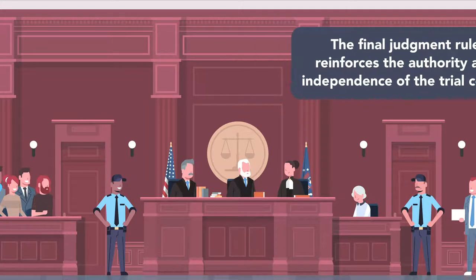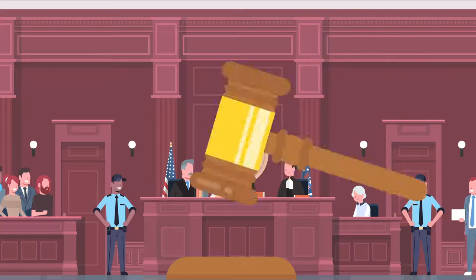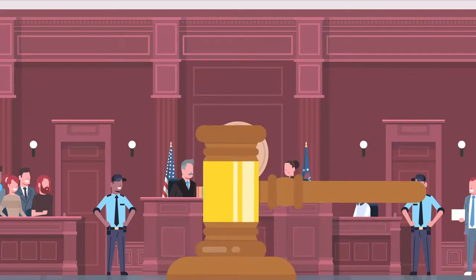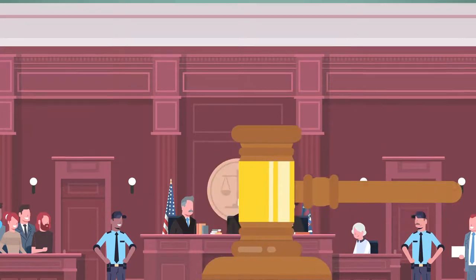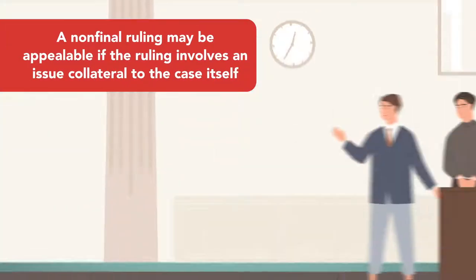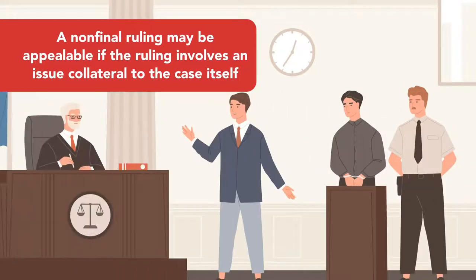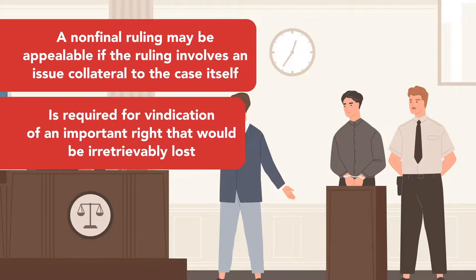There are exceptions to the Final Judgment Rule. For example, a non-final ruling may be appealable if the ruling involves an issue collateral to the case itself and is required for vindication of an important right that would be irretrievably lost if review had to await final judgment.